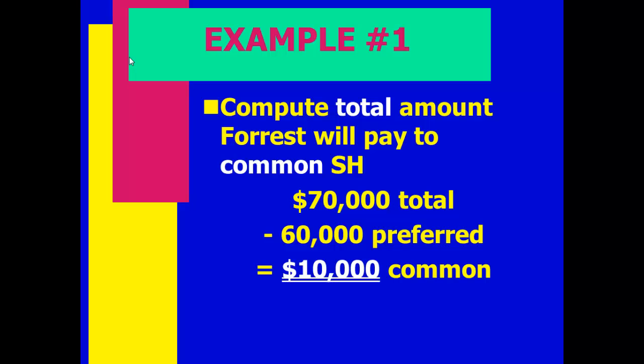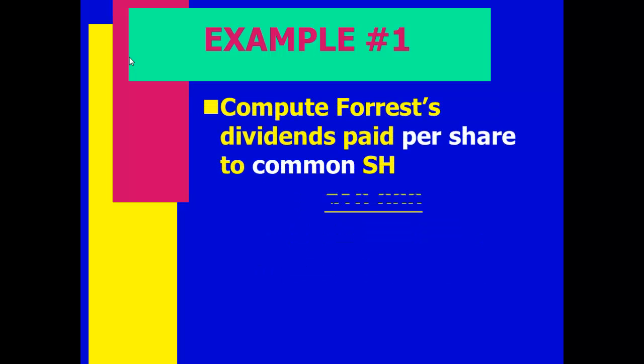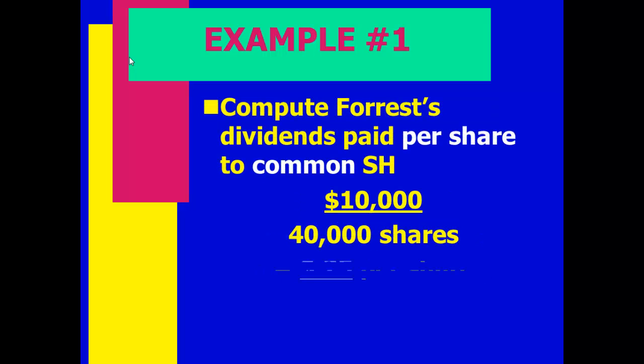Common stockholders get the residual — the leftovers. When times are hard, they don't get much; but when times are good, the sky's the limit with no maximum amount. Preferred stockholders get roughly $20,000 a year whether times are good or bad — they might have to wait, but they'll get it. The $10,000 for common divided by 40,000 shares equals $0.25 per share.